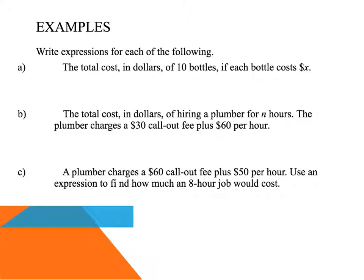Okay, write expressions for the following. Now remember, expressions don't have equal signs. We're not trying to solve anything, we're just trying to have a look at it. It says the total cost in dollars of 10 bottles if each bottle costs X dollars. So each bottle is X and I have 10, so it's X times 10. How do I write that? Do I write X times 10? No, no, I know that's not how I write it. I write it like this: 10X. That's the total cost in dollars of 10 bottles.